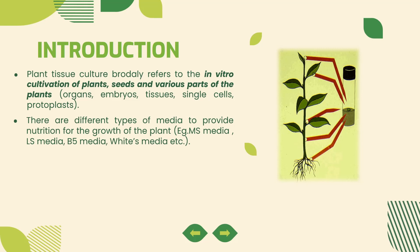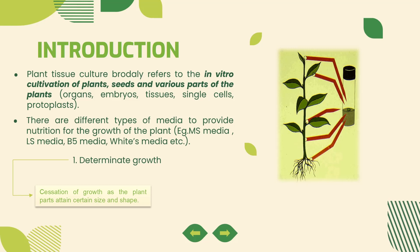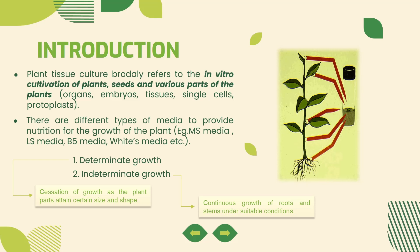First, Determinate Growth. Determinate Growth means the plant grows to a certain size and shape and then stops automatically. Next, Indeterminate Growth — this plant continues to proliferate. It is presented with meristematic cells, meaning the plant continues to grow indefinitely.